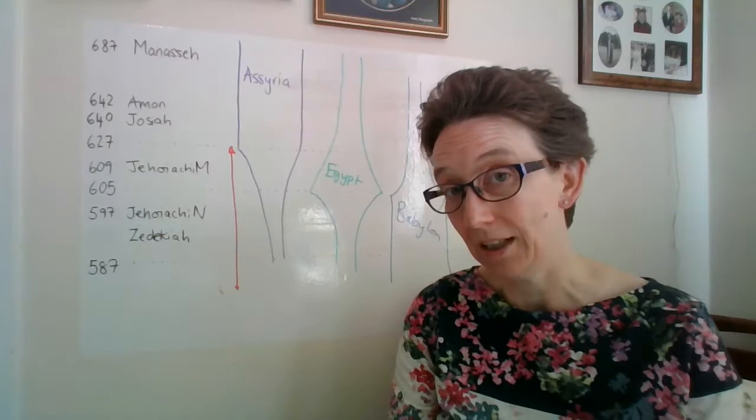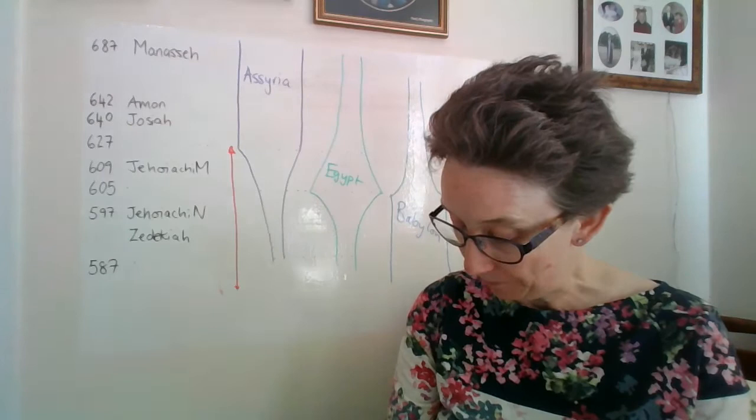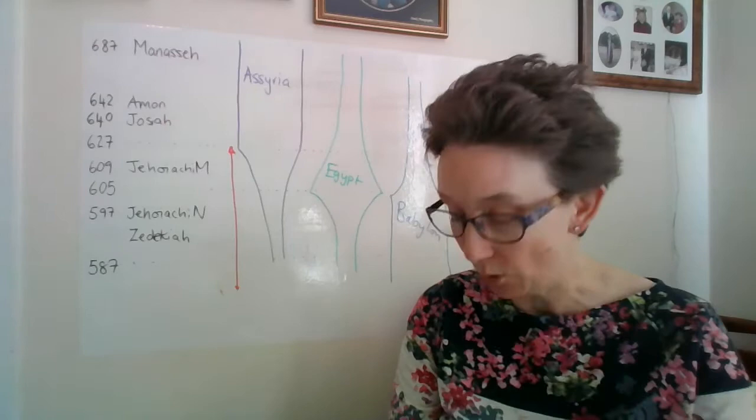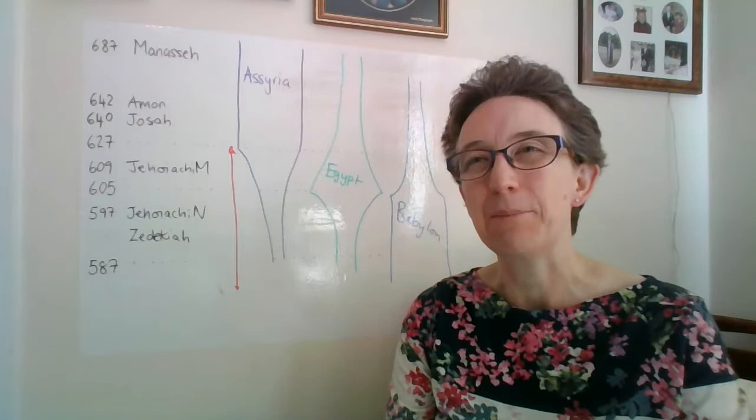Jeremiah's call is given to us in chapter 1. Jeremiah was a young man when he was called. Verse 4: the word of the Lord came to me saying, before I formed you in the womb I knew you, before you were born I consecrated you, I appointed you a prophet to the nations.